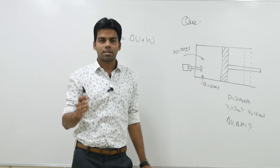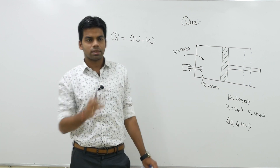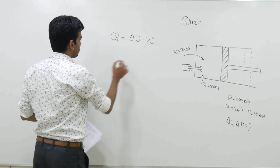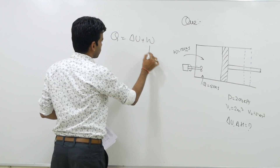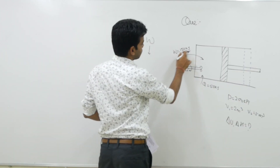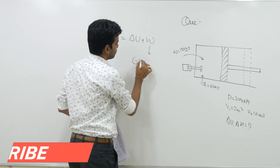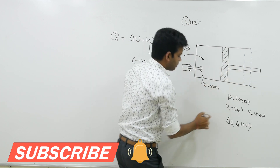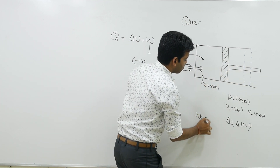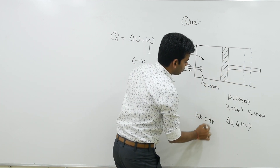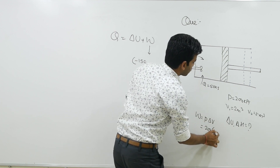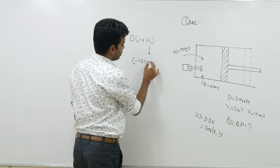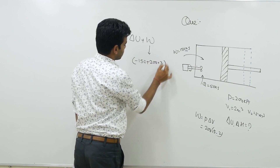From sign convention, work done by the system is taken as positive and work done on the system is taken as negative. So we have two work terms: the paddle wheel work of 150 kilojoule done on the system (negative), and the displacement work done by the system which is P·ΔV — that is 200 into (V2 minus V1), which is 200 into (5 minus 2), giving 200 into 3.